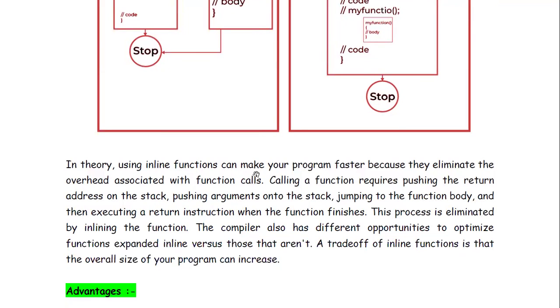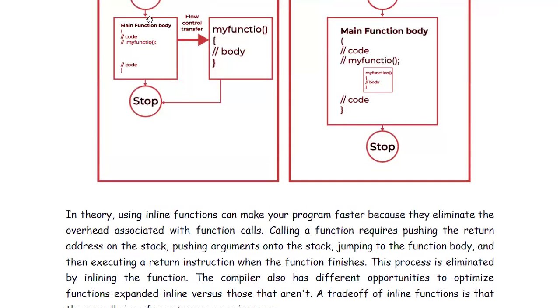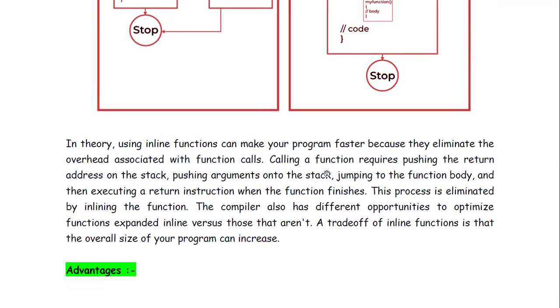In theory using inline functions can make your program faster because they eliminate the overhead associated with function calls. Calling a function requires pushing the return address on the stack, pushing arguments onto the stack, then jumping to the function body and then executing a return instruction when the function finishes. So this many operations need to be done when a function call is performed. Now this process is eliminated by inlining the function.